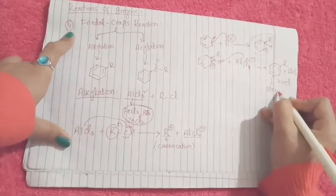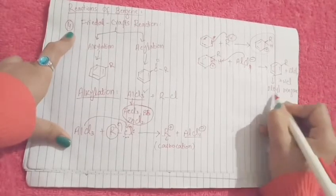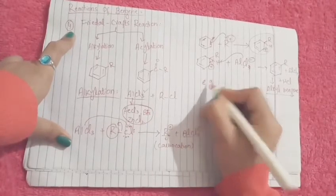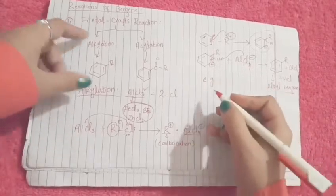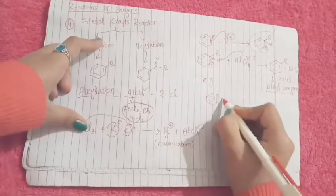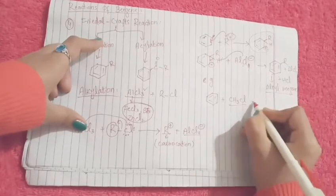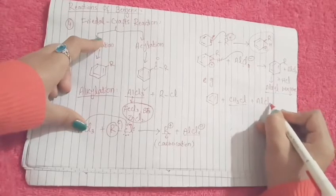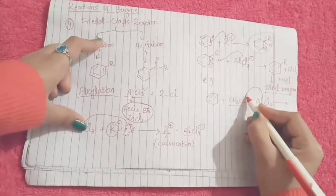We got our alkyl benzene which we needed. Now I'll give you some examples of this alkylation. We will take these reagents: methyl chloride plus Lewis acid aluminum chloride.